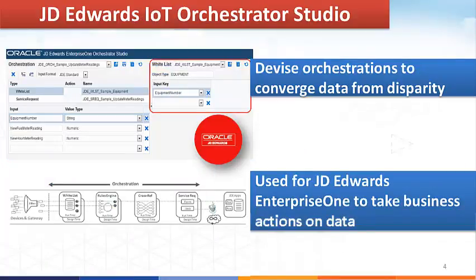Next up comes the very important feature of this setup: the Oracle JD Edwards IoT Orchestrator. The Orchestrator lets you design and deploy orchestrations, also known as processes. It takes input from external disparate sources, filters the data, and applies rules to update the JD Edwards forms via the AIS server. The Oracle IoT Cloud Service switches out to the orchestrator whenever certain criteria are met or an application has to be updated, transforming data into actionable business processes for use with JD Edwards Enterprise One.